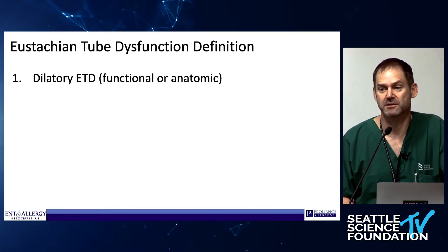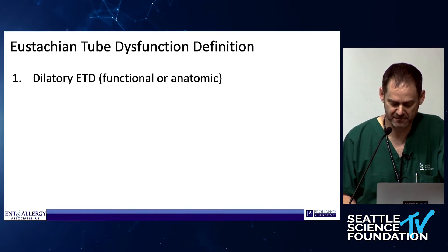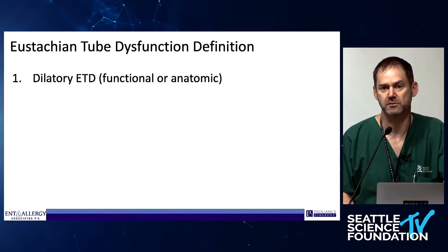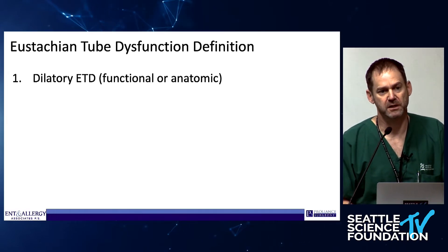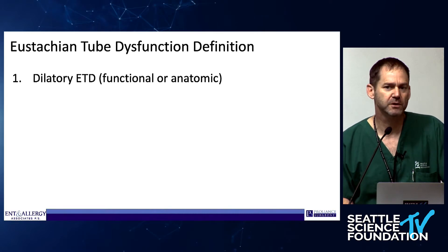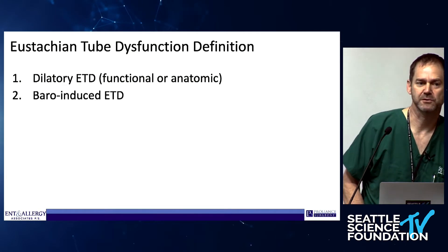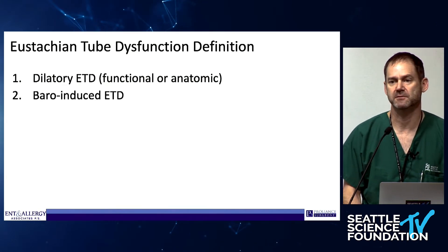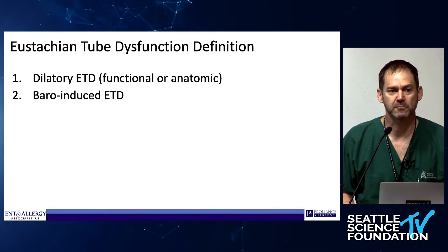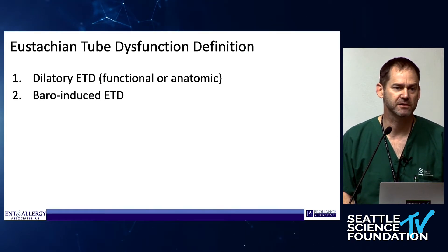There's also anatomic eustachian tube dysfunction — that's when you're going to find a big nasopharyngeal mass. If I'm considering balloon dilation of the eustachian tube, I'll use a zero-degree endoscope, because that's what I'll probably be using when I do the procedure. But the key is baro-induced eustachian tube dysfunction. Those are our classic patients: scuba divers, pilots, flight attendants, people who go skiing a lot — people who only have dysfunction when they're stressing their eustachian tube.